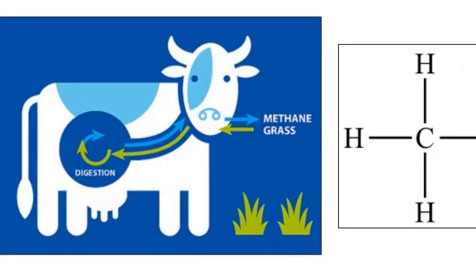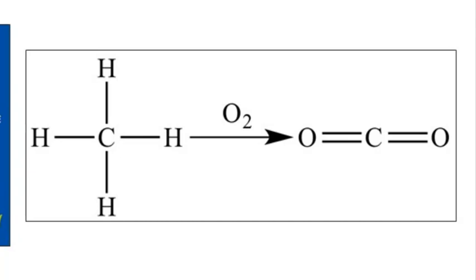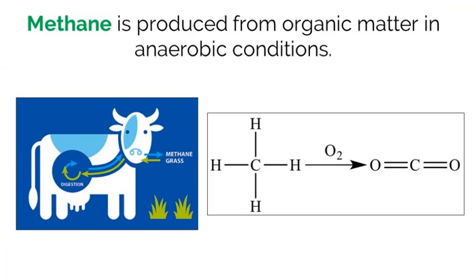Once in the atmosphere, methane can be oxidized, which means it chemically reacts with oxygen, and turned into water and carbon dioxide. This process adds both water and CO2 into the atmosphere.